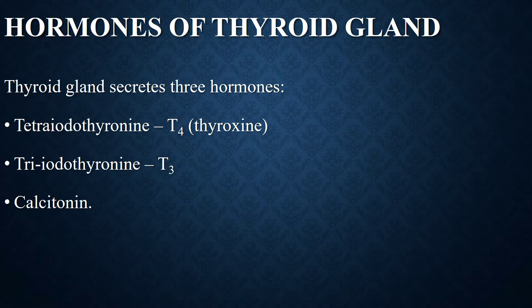Let's look into the hormones of the thyroid gland. The thyroid gland secretes three hormones: tetraiodothyronine (T4/thyroxine), triiodothyronine (T3), and calcitonin. Both T4 and T3 are iodine-containing derivatives of the amino acid tyrosine. T4 is otherwise known as thyroxine and forms about 90% of the total secretion, whereas T3 is only 9-10%.